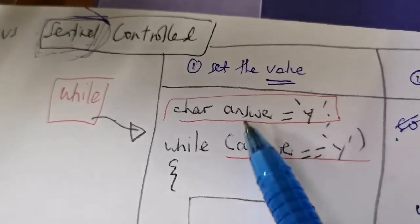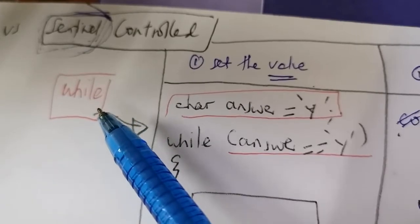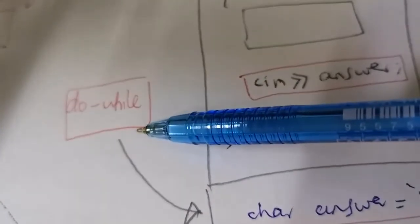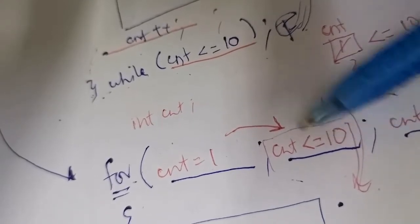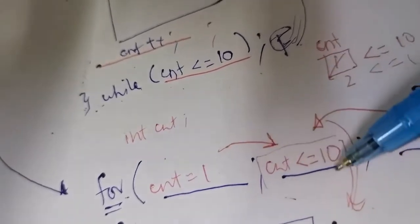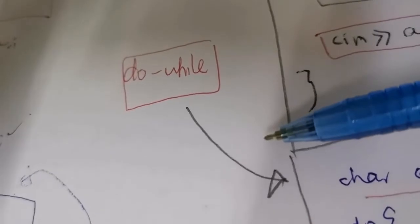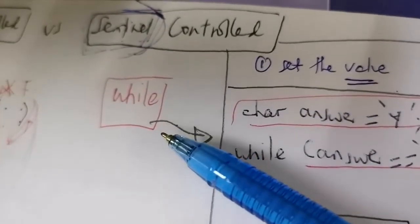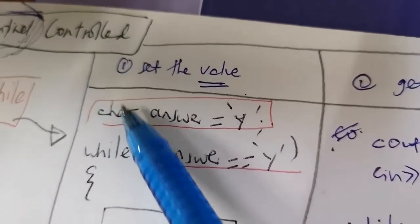For sentinel control, you can only use two structures: the while loop and the do-while loop. The for loop can only be used with counter control — something where you can count the number of repetitions. For sentinel control, use while or do-while. If you're unsure which loop to use, always opt for the while loop.